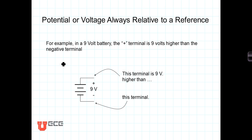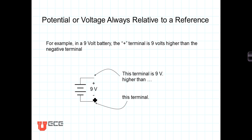For example, if we had a nine-volt battery, the terminal marked with a positive sign is said to be nine volts higher than the other terminal. We could also say that this terminal is nine volts lower than the other, and that there's a nine-volt difference between the terminals.